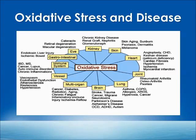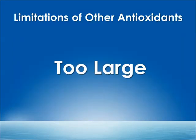If oxidative stress is the fundamental cause of most diseases, then what can we do to stop it? We need to take antioxidants. However, there are many limitations to the antioxidants usually available to us. One of the biggest limitations is that they are too large — too large to get to where the free radicals are formed, which is inside the mitochondria. They need to quench the free radicals at the source before the damage spreads outside the mitochondria and into the cell. But most antioxidants are much too large to do that.